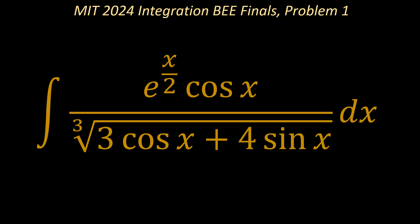So this problem here is interesting, and one thing that I personally would consider is looking at the denominator and see that there should be a derivative of 3 cosine x plus 4 sine x to the power 1 over 3 plus 1, and then that has to be combined with the derivative of e to the power x over 2.